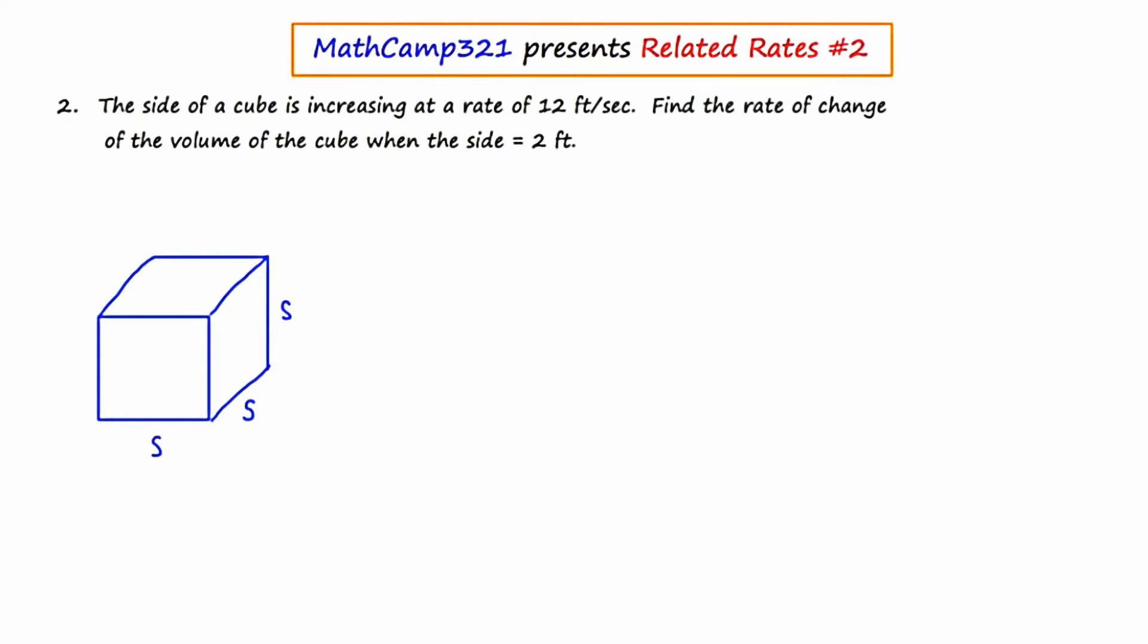Let's identify the things that we know. The side is increasing at a rate of 12 feet per second. So this would be denoted as ds/dt is equal to 12 feet per second.